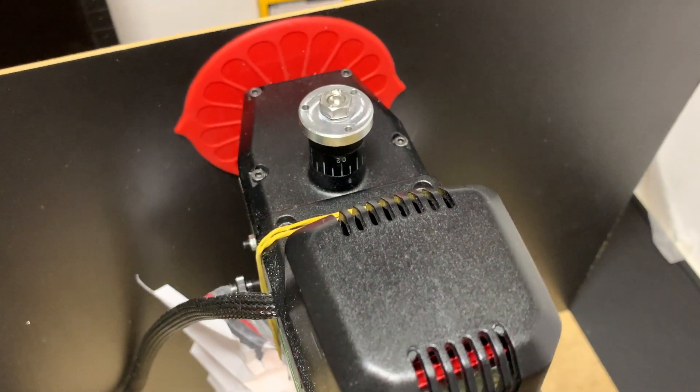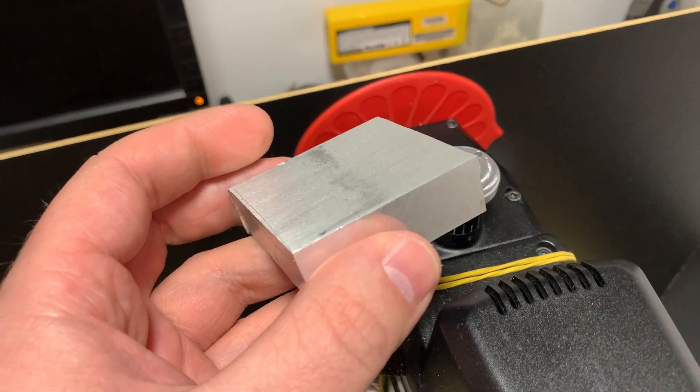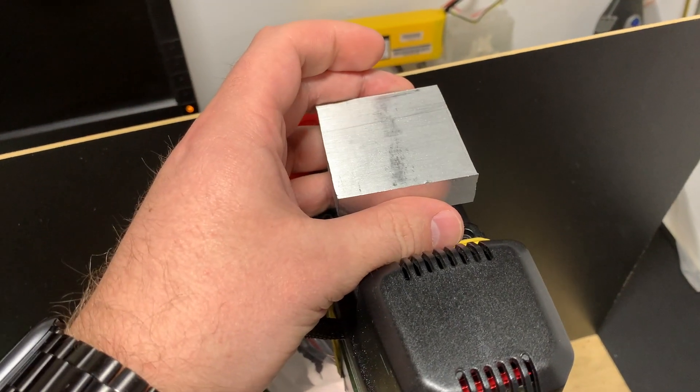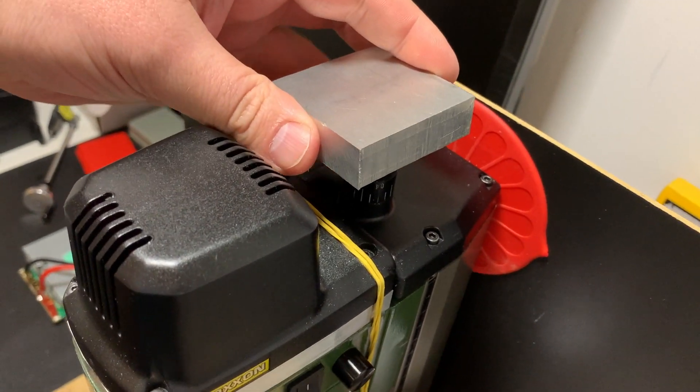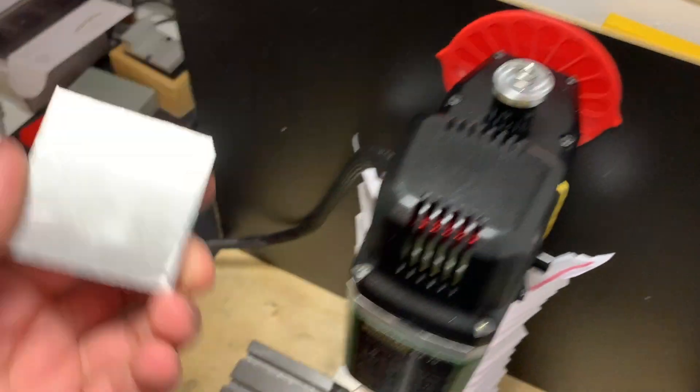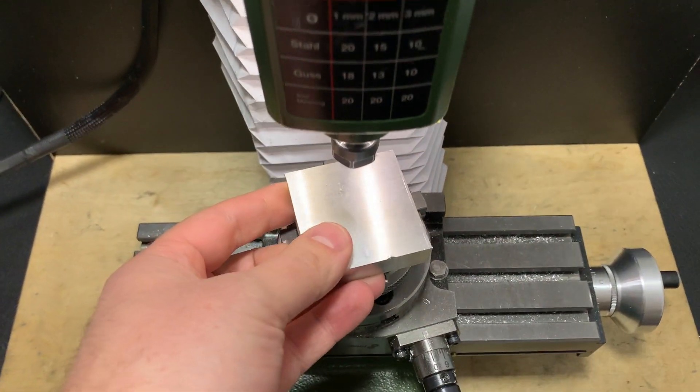So now the time is for the next part of this puzzle. This thing should be mounted. So it should be mounted here. Not like this. Okay, a bit of cutting. Let's do that.